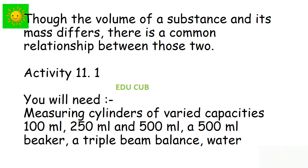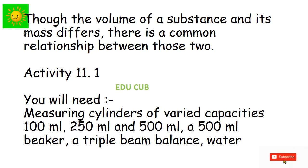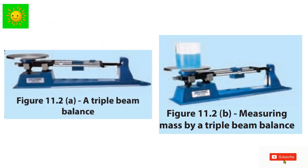We have to find out this relationship by using measuring cylinders of varied capacities: 100 milliliter, 250 milliliter, and 500 milliliter. We also need a 500 milliliter beaker, a triple beam balance, and water.